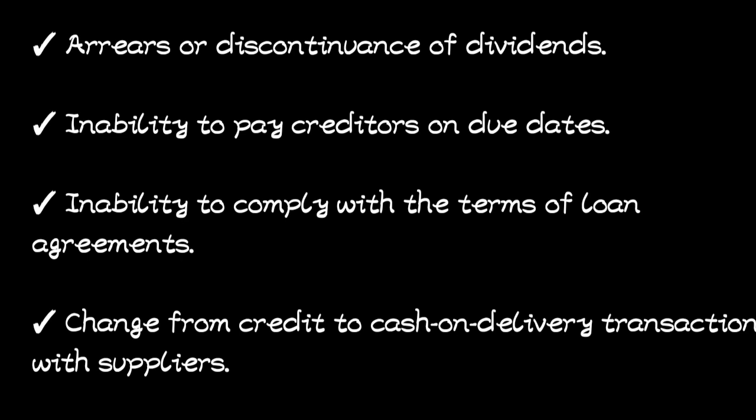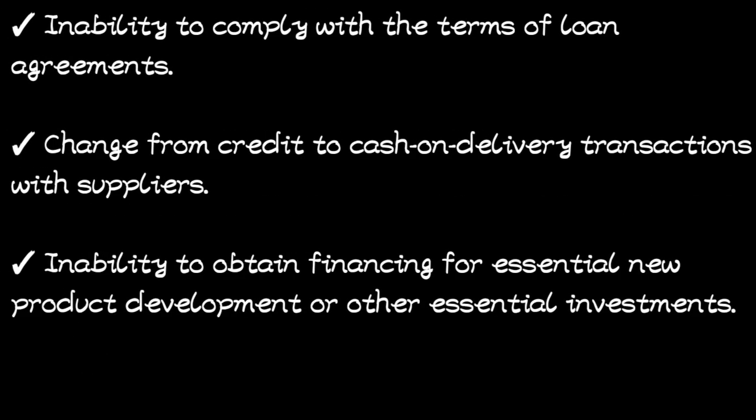Another indicator is inability to pay creditors on due debts — they cannot pay people demanding payment when the debt is due. Then, inability to comply with the terms of loan agreements: if they cannot meet what the loan givers require per the loan agreement, it shows there is a problem. Also, a change from credit to cash-on-delivery transactions with suppliers — if suppliers who previously allowed credit now demand cash on delivery, that signals a problem.